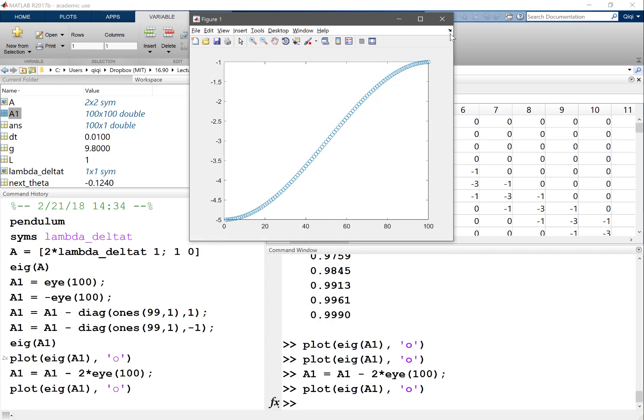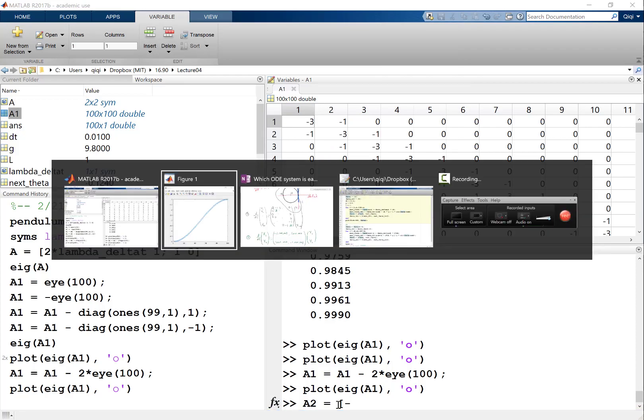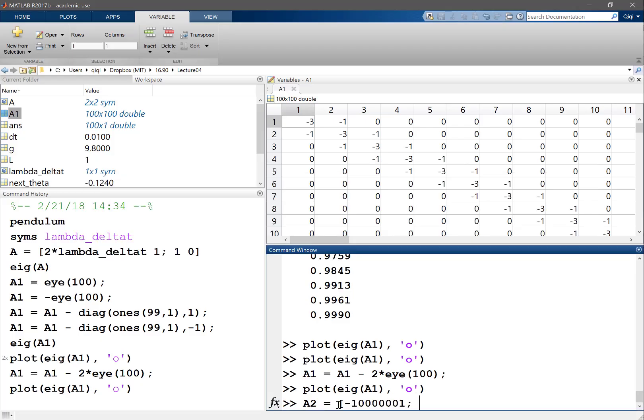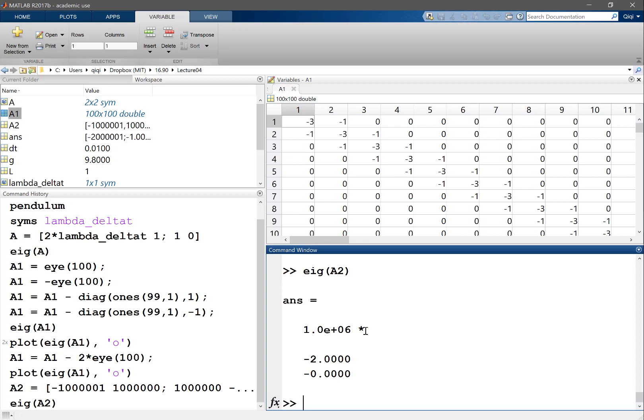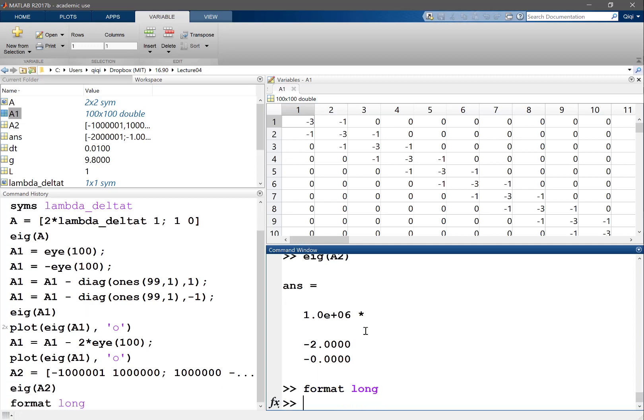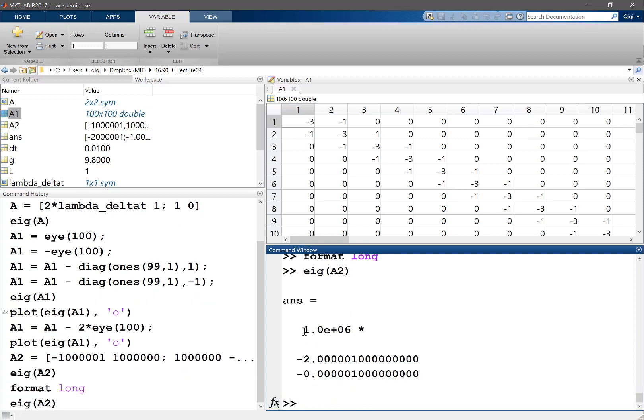How about the second one? My A2 is going to be [-1000001, 1000000; 1000000, -1000001]. This is my A2. eig of A2, let's do format long. eig of A2 is going to be - the first one is minus 2 million, the second one is minus 1.